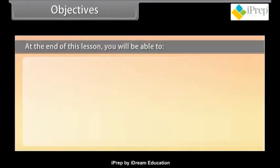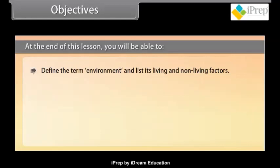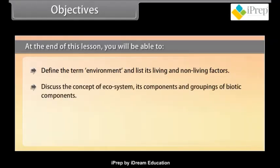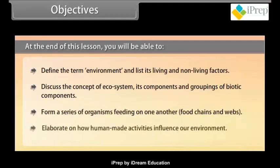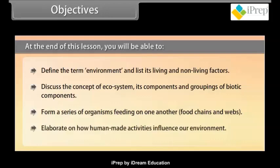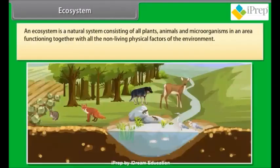Objectives: At the end of this lesson you will be able to define the term environment and list its living and non-living factors, discuss the concept of ecosystem and its components and groupings of biotic components, form a series of organisms feeding on one another — food chains and webs — and elaborate on how human-made activities influence our environment.